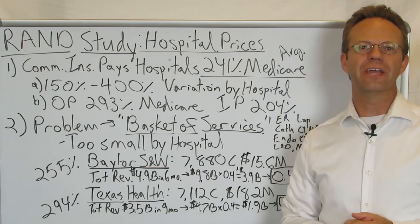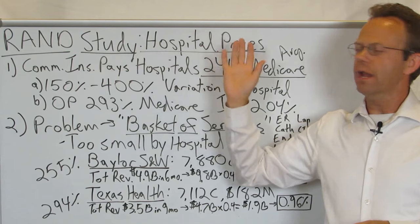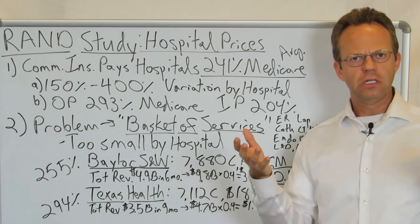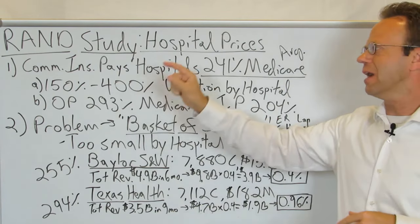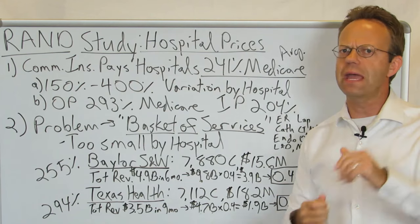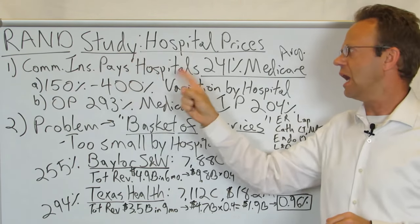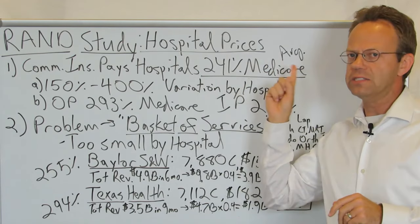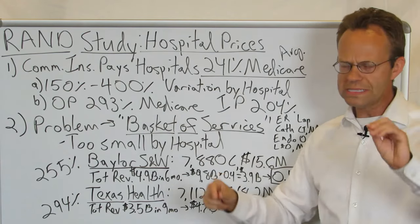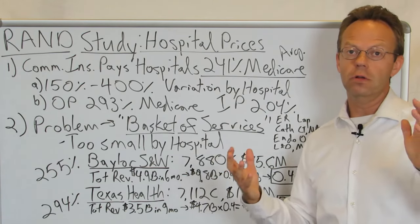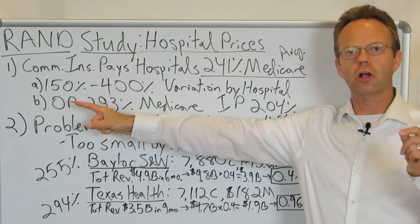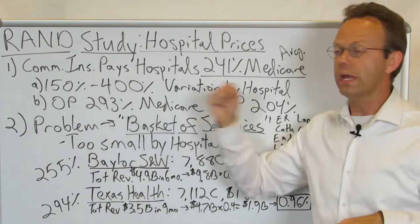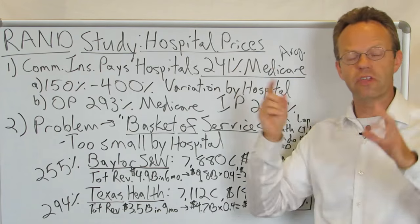Today's topic is a recent RAND study on hospital prices. The RAND study, which came out on May 11, 2019, said that commercial insurance pays hospitals on average 241% of what Medicare pays. That's on average — the study also noted that amount was highly variable by hospital: at the low end, some hospitals charged commercial insurance about 150% of Medicare (after discounts, this is the allowed amount), all the way up to 400%. So not only was it on average 241%, it was also highly variable.